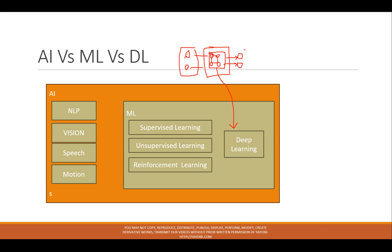This is the artificial intelligence part. Deep learning is a subset of machine learning, and machine learning is a subset of artificial intelligence. This is how they are linked.